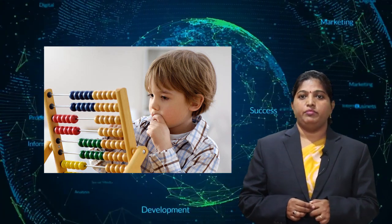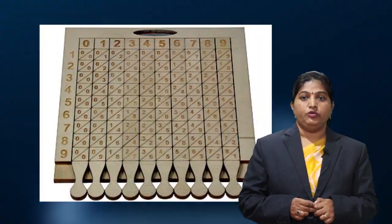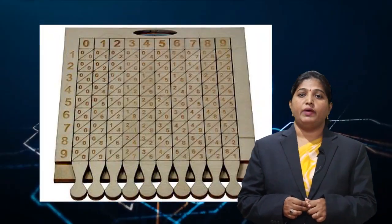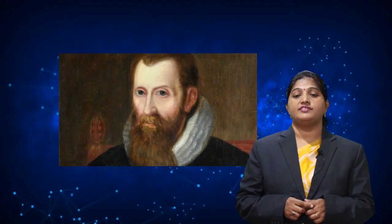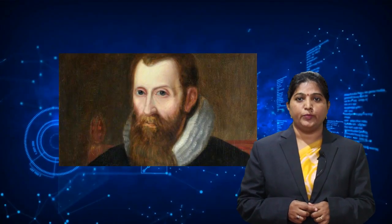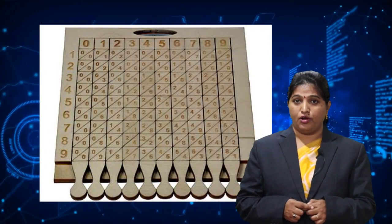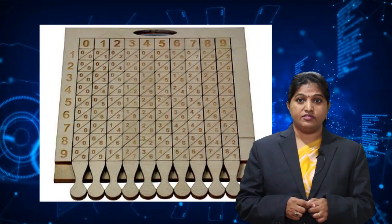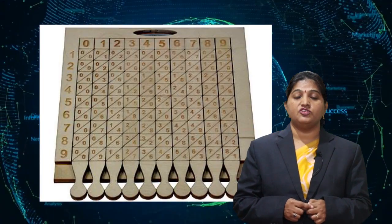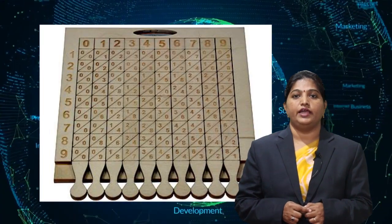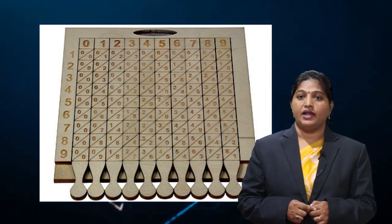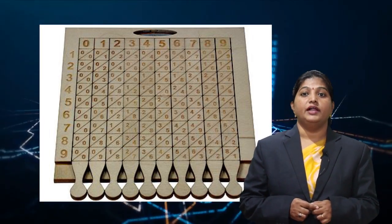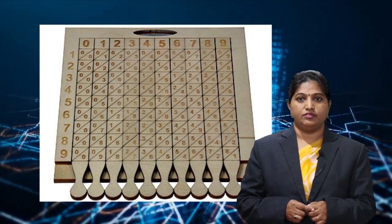Even today, the Abacus is used by young children to learn basic calculations. Next came Napier's bones. It was invented by John Napier, a Scottish mathematician, in 1617. The device has a set of rods or bones with multiplication tables on them. It performed addition, subtraction, multiplication, and division.